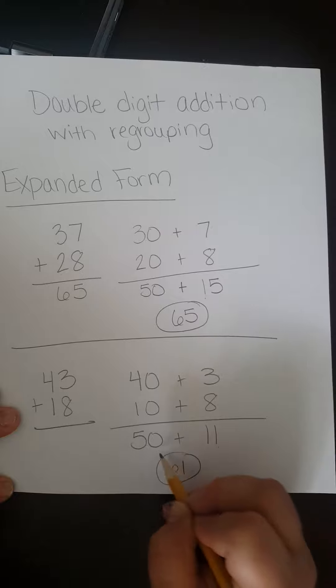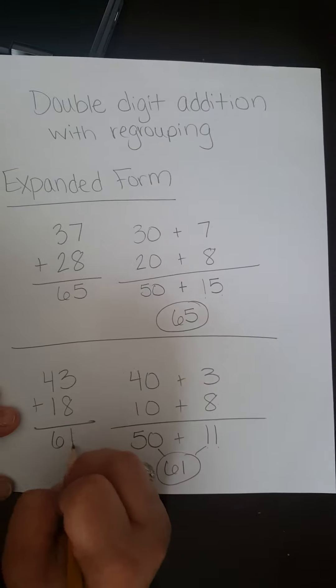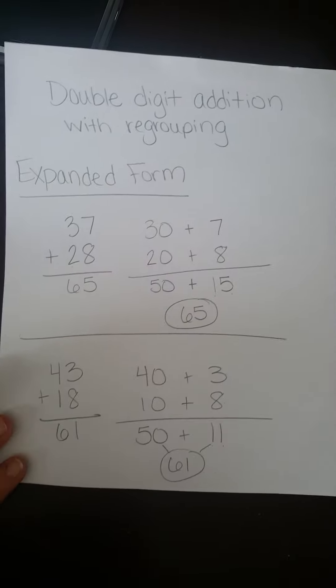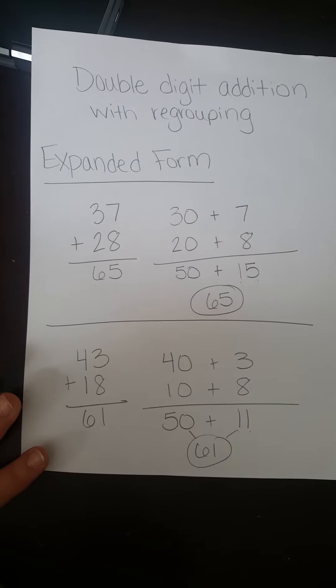So 61. That is double digit addition with regrouping using expanded form strategy.